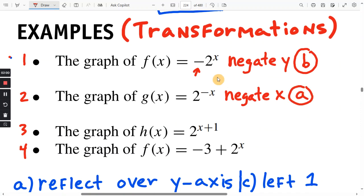All right, so good review. When you multiply y by negative one, it reflects over the x. When you multiply x by negative one, it reflects over the y.